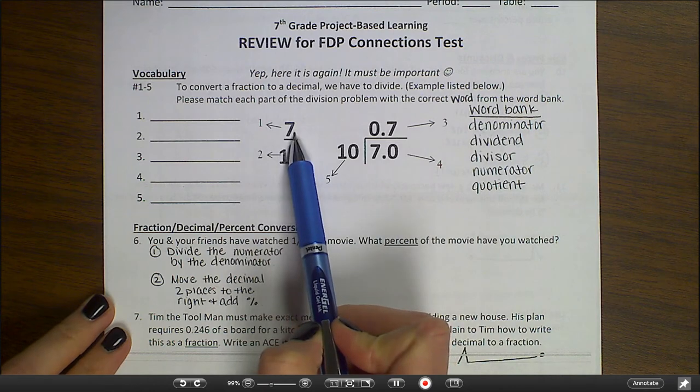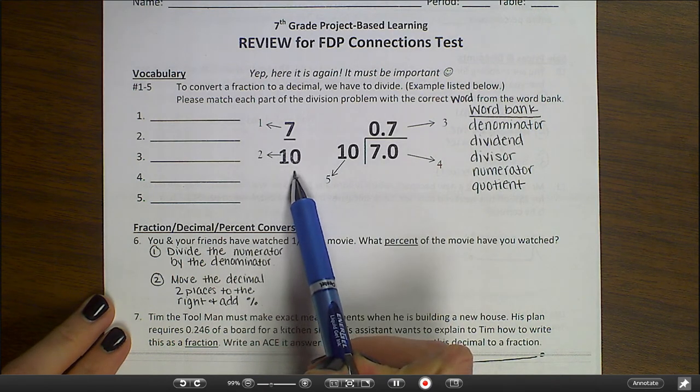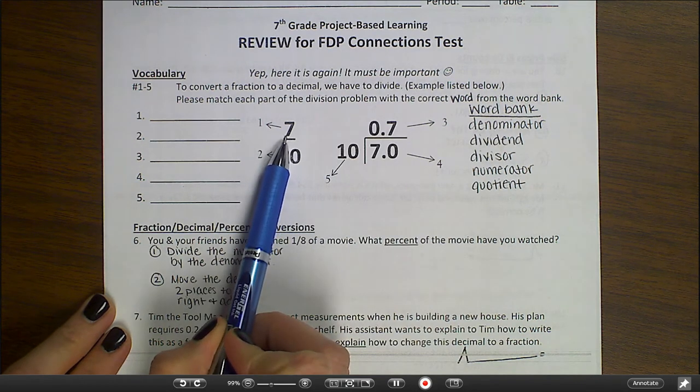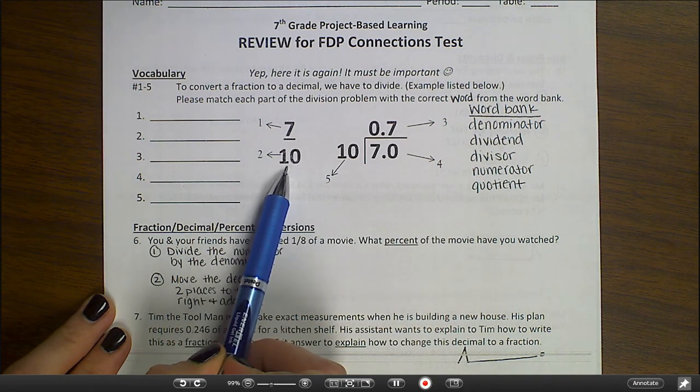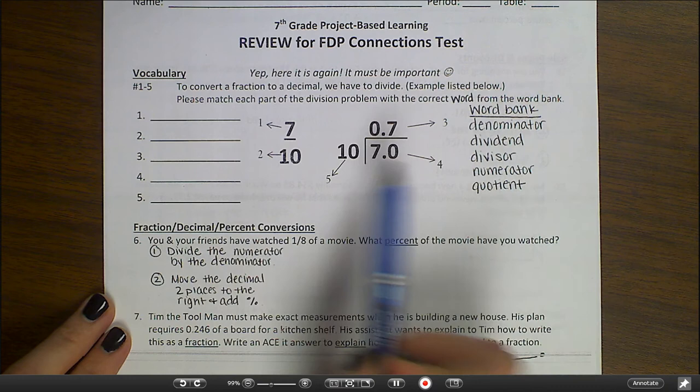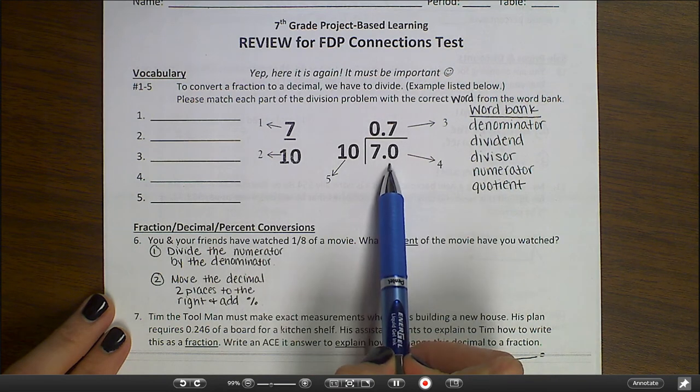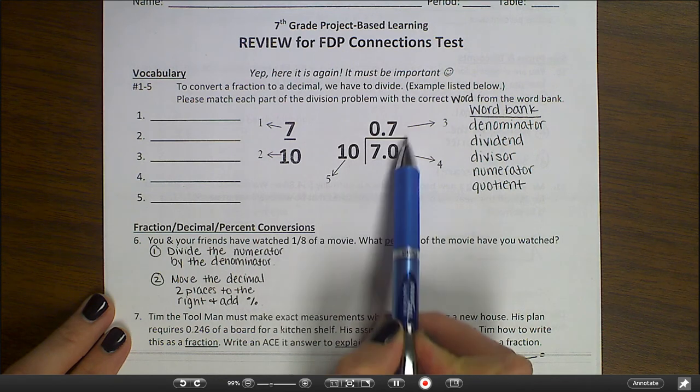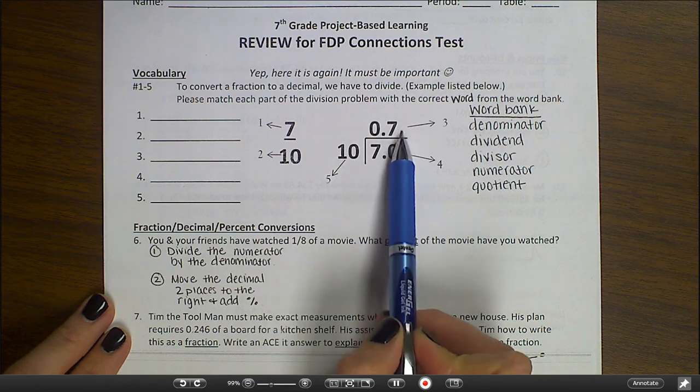In a fraction we have a numerator and a denominator. The top number, or the north number, is the numerator. The bottom number, or the one that's down, is the denominator. Then our numerator becomes our dividend, divided by the divisor, and the answer to our division problem is a quotient.